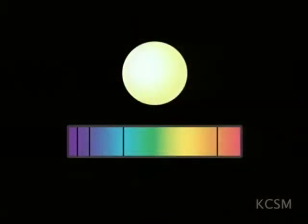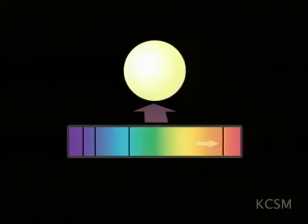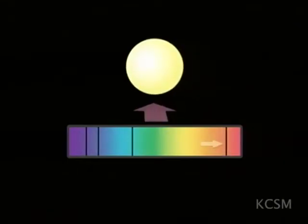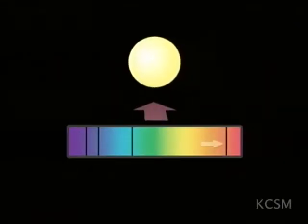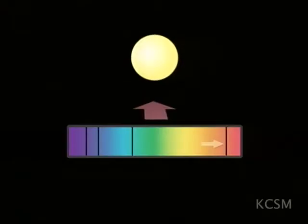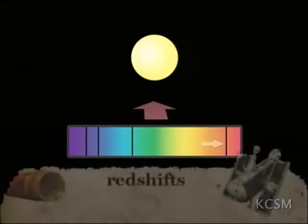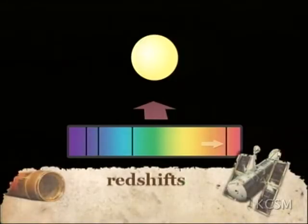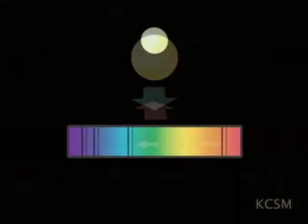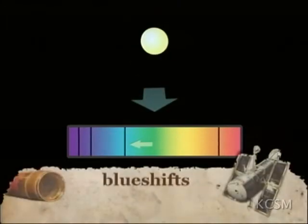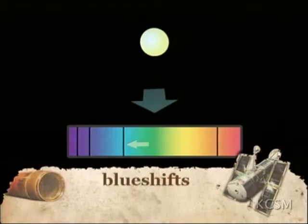These shifts are classified by the direction they move within the spectrum. Objects moving away from us exhibit shifts to the longer wavelengths — we call them red shifts. Objects moving toward us exhibit shifts to the shorter wavelengths and are called blue shifts.